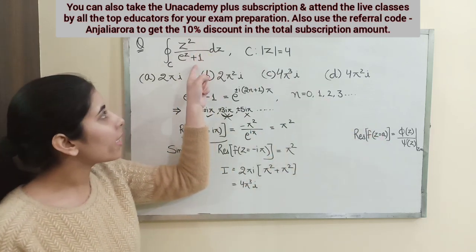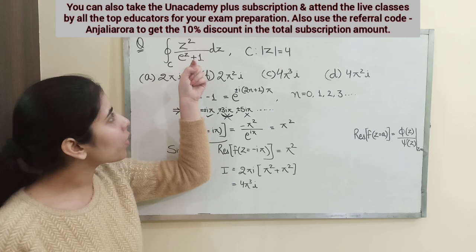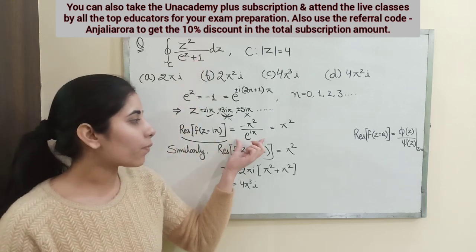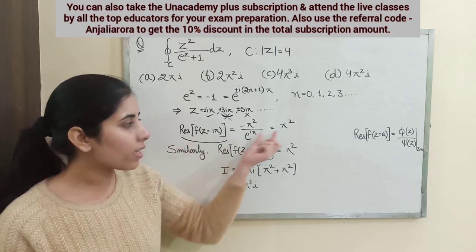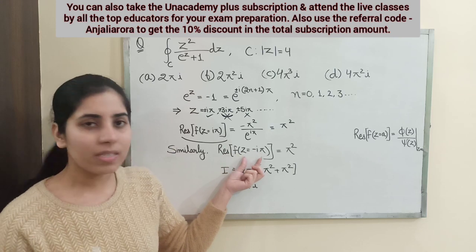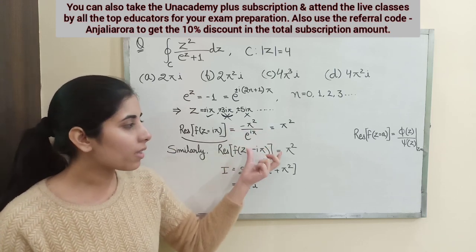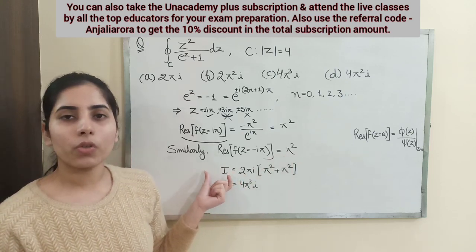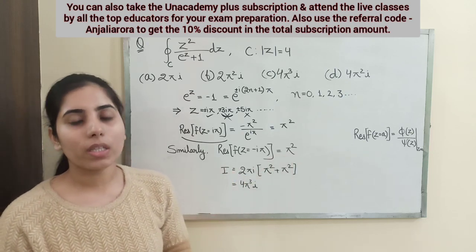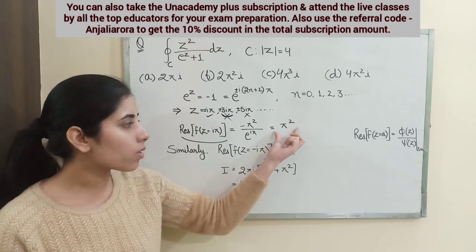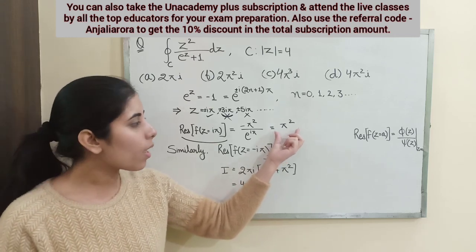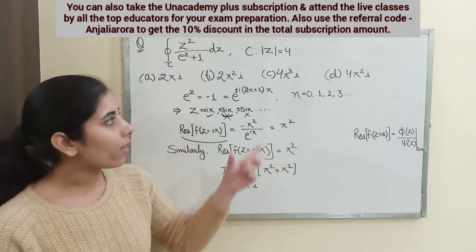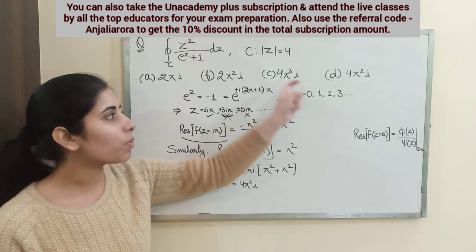Applying this formula at z = iπ gives residue = π², and similarly at z = -iπ we also get π². The integral equals 2πi times the sum of residues at poles within the contour, so we get 2πi × (π² + π²) = 4π³i, which is option C — the correct answer.